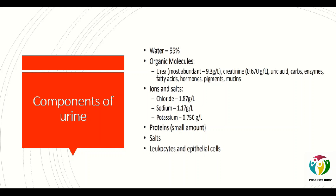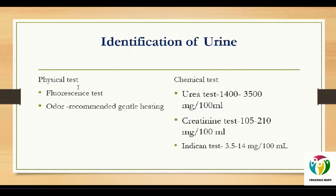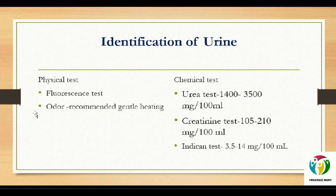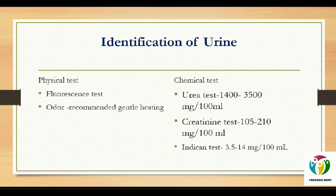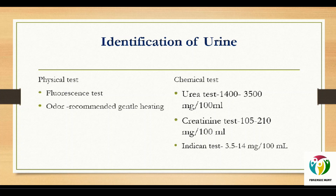As for ions, urine is composed of chloride, sodium, and potassium. Certain proteins and cells are also present. Other components include glucose, ketone, bilirubin, urobilin, and urobilinogen. Identification of urine can be done based upon physical properties or chemical constituents. For physical properties, the first is fluorescence — urine fluoresces. When you have a suspicion whether a given sample is urine or not, you take the sample under an alternate light source and it will fluoresce. However, when the sample is diluted, it is harder to detect.